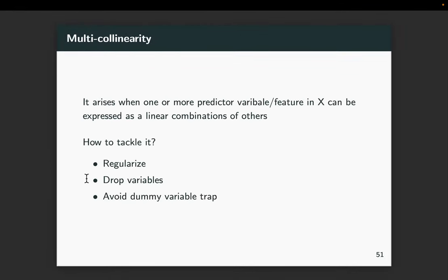Another way to avoid multicollinearity is to avoid something known as the dummy variable trap. Dummy variables are extra variables we create that did not exist in the original data. One common scenario where this occurs is when we are trying to encode certain categorical features.